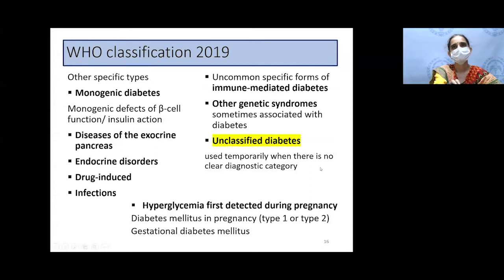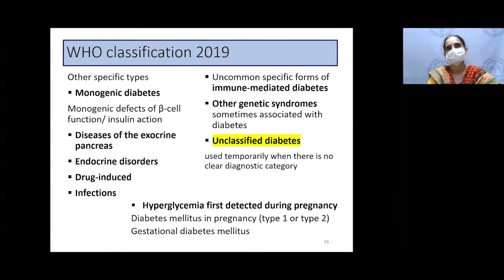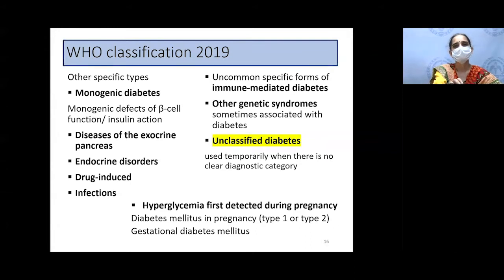Under the WHO classification, monogenic diabetes, defects of the exocrine pancreas, endocrine disorders, drug-induced, infections, and genetic syndromes are all incorporated. The WHO also added the new term 'unclassified diabetes,' which can be used temporarily when it is not clear what type of diabetes we are dealing with before a definitive diagnosis is made. Diabetes in pregnancy is further classified as type 1 or type 2 first detected in pregnancy, or as gestational diabetes.